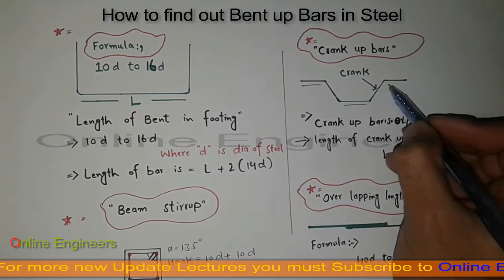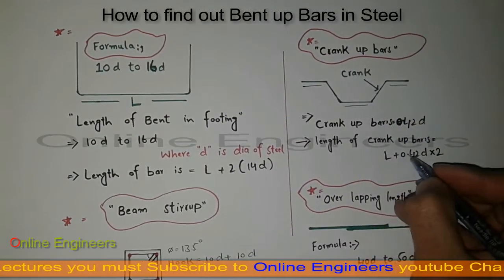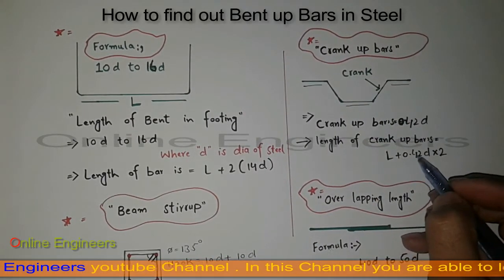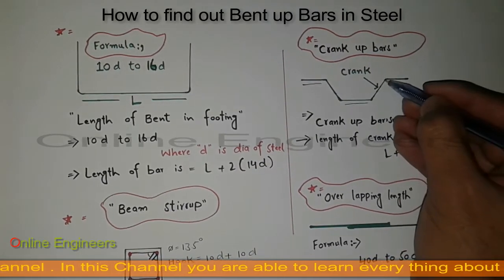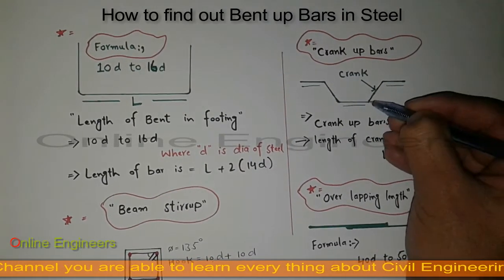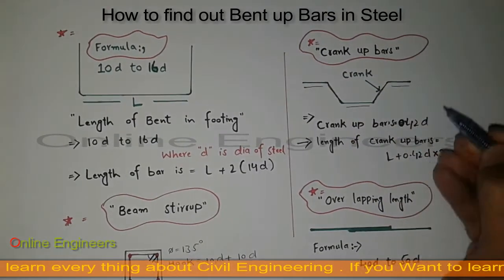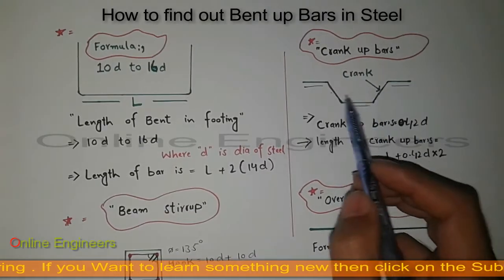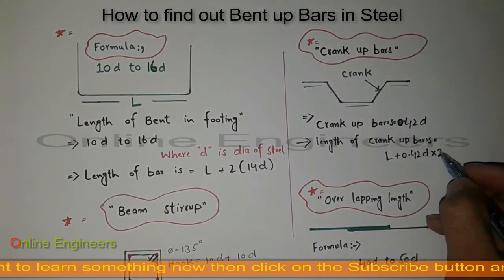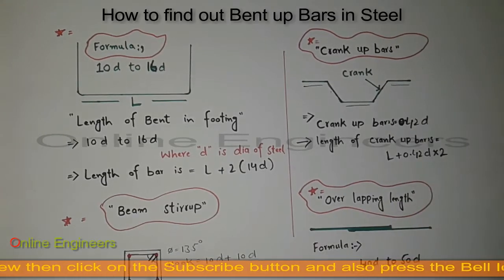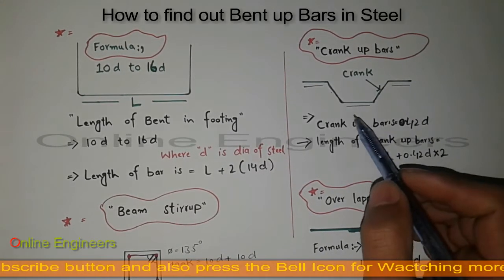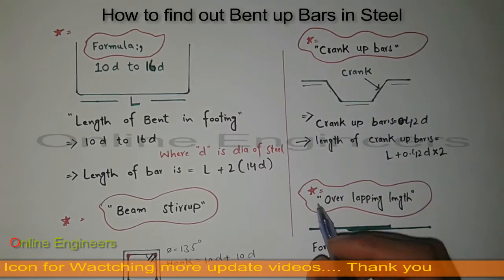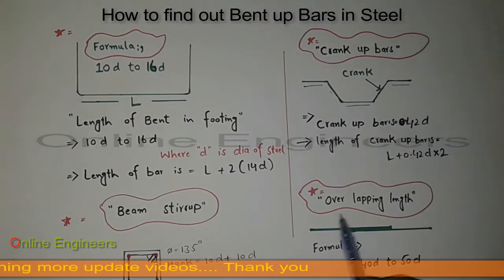The third length is this one. So capital L equals these three lengths, then add 0.42d — this is one crank — and another 0.42d for the second crank. For that I multiply by 2: two cranks, so multiply by 2. By this formula you can easily find out the total length of this one bar.